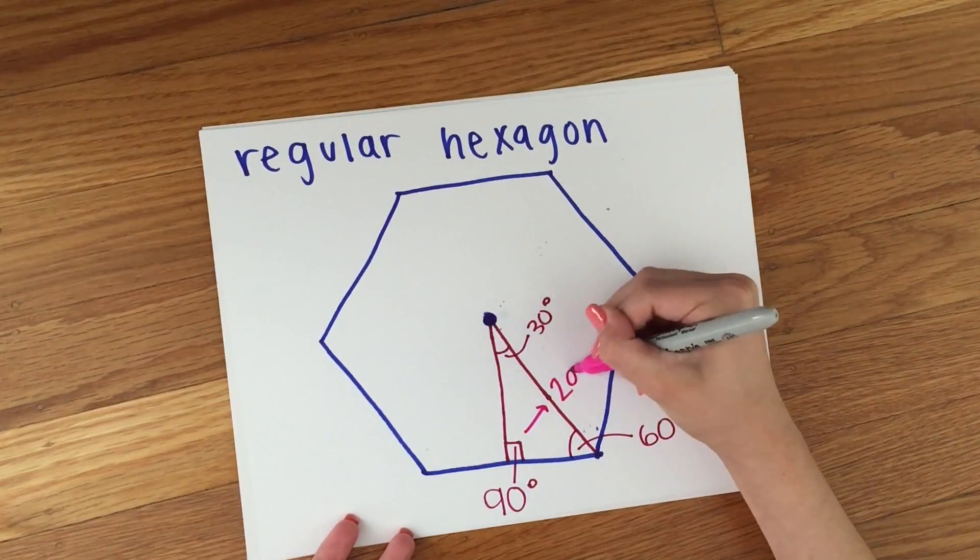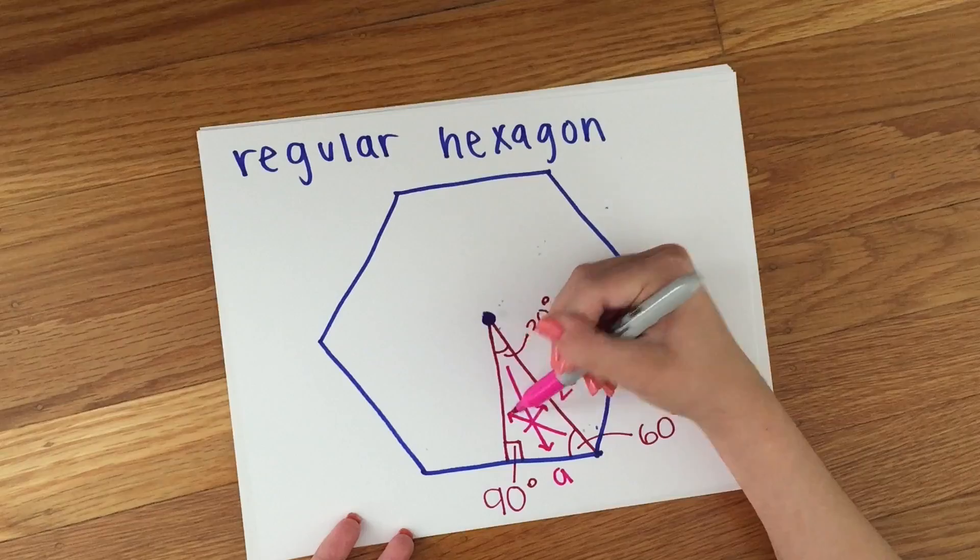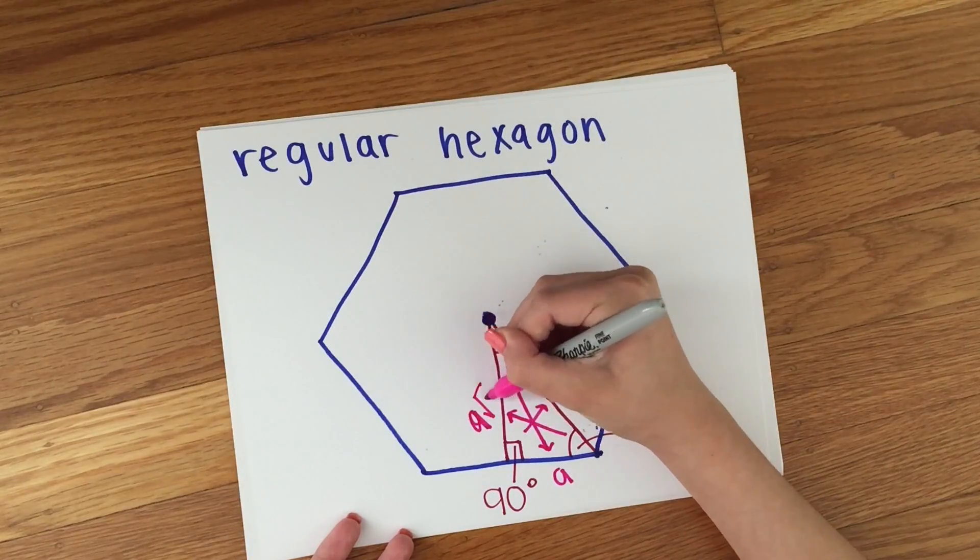Now that we know all the measures, we can find the apothem, which would be a root 3.